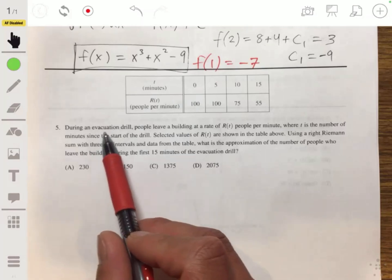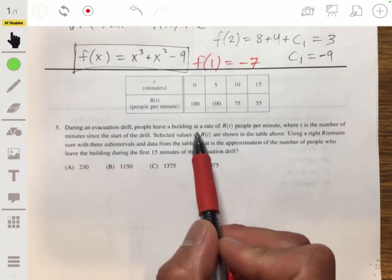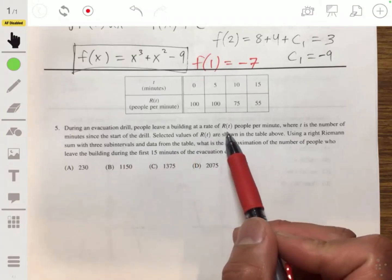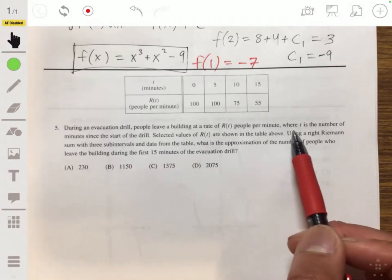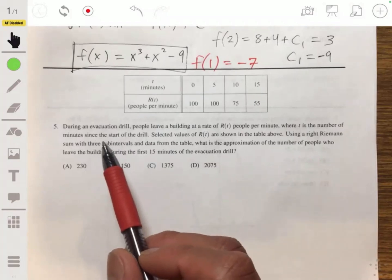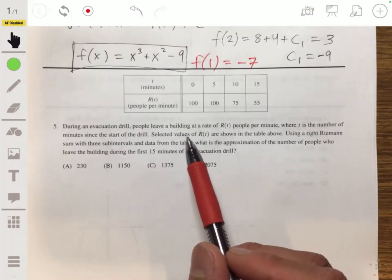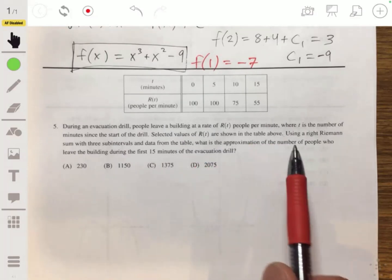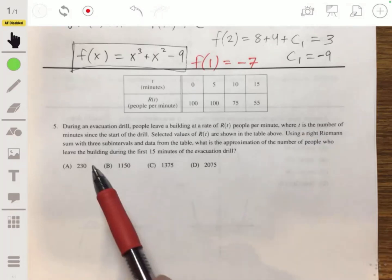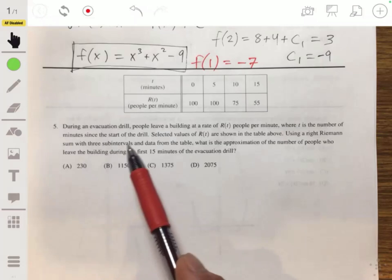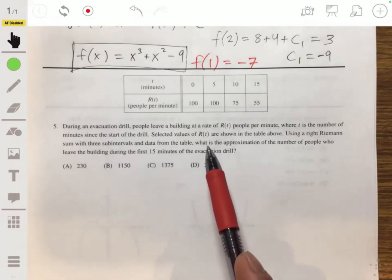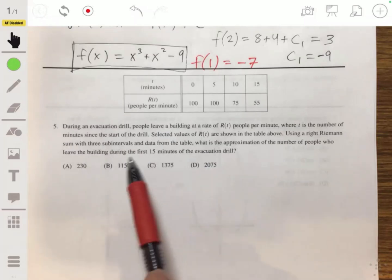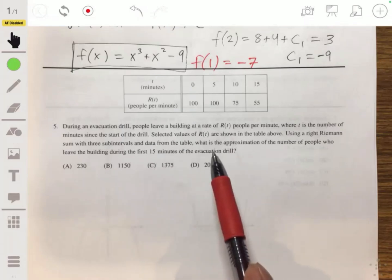Problem 5, during an evacuation drill, people leave a building at a rate of R(t) people per minute, where t is the number of minutes since he started the drill. Selected values of R(t) are shown in the table above. Using a right Riemann sum with 3 subintervals and data of the table, what is the approximation of the number of people who leave the building during the first 15 minutes of the evacuation drill?